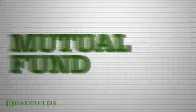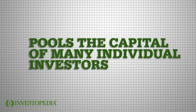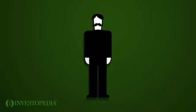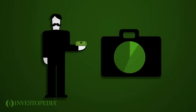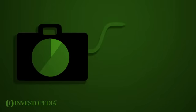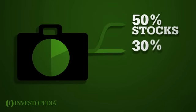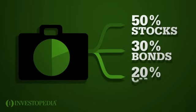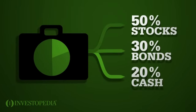A mutual fund pools the capital of many individual investors and invests it in a set portfolio. Steve decides that he would like to start investing. He wants a balanced portfolio broken down into 50% stocks, 30% bonds, and 20% cash.